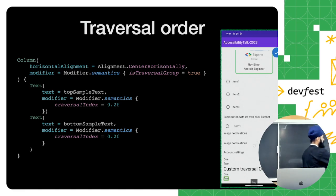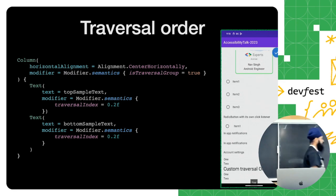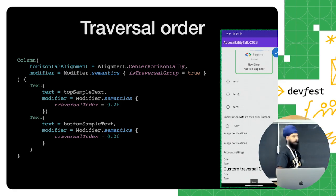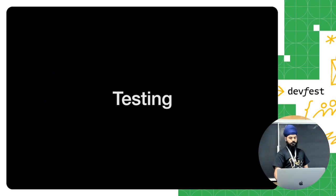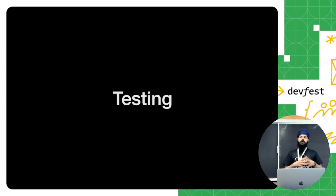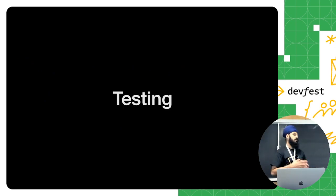So we've covered how to add accessibility information to our components. The major important thing now is how we can check and test that quickly. We have a couple of options — the first is manual testing. You just have an Android device, enable any accessibility service, run through the app, and it will report if there are color contrast issues, missing content descriptions, and similar problems.